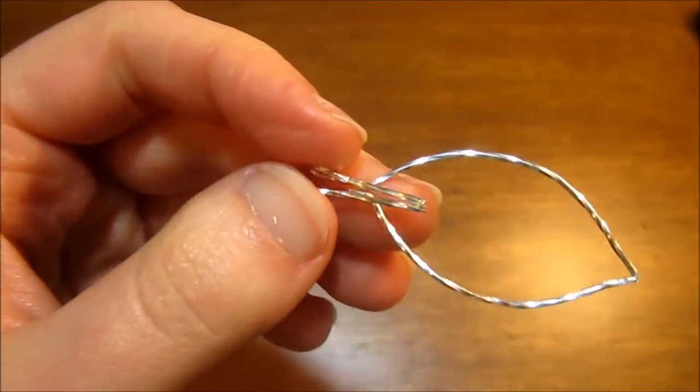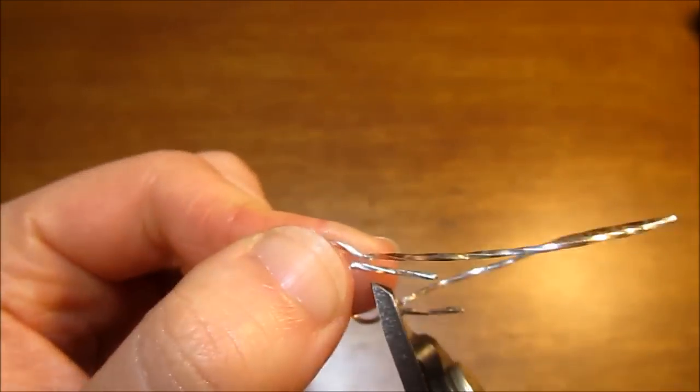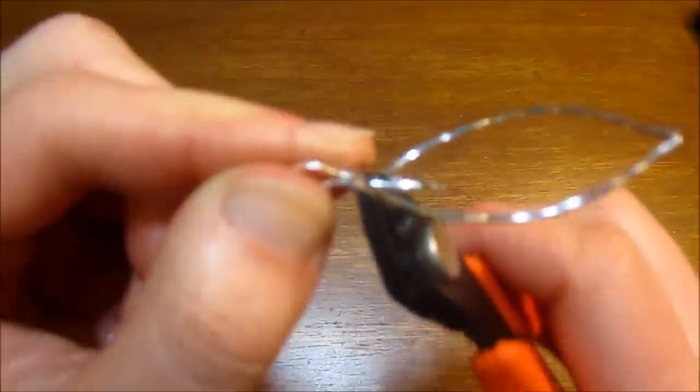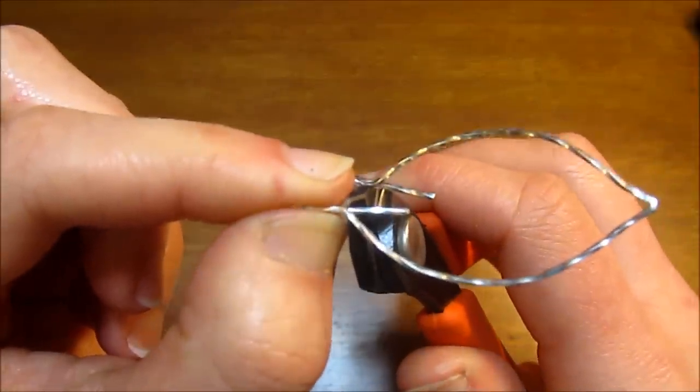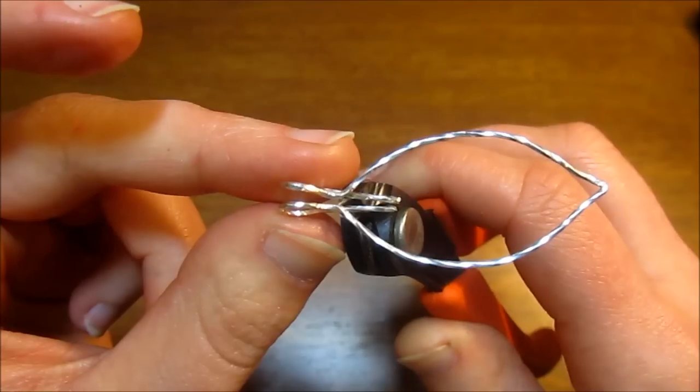And once you've done that, you can go ahead and trim off the excess tail, and you're going to trim this right at the base of the bail where the point of your marquee shaped frame would start.